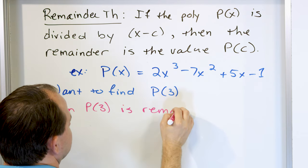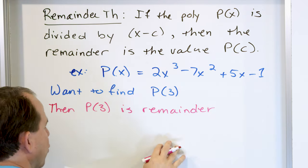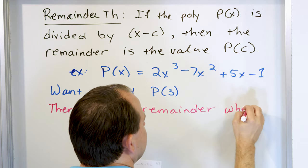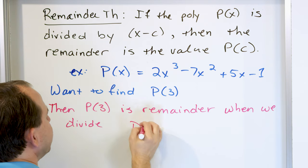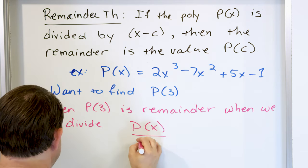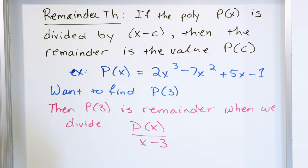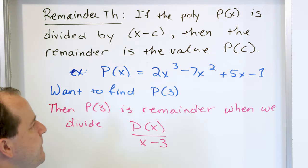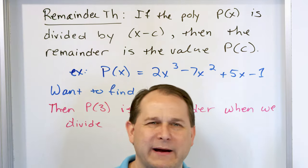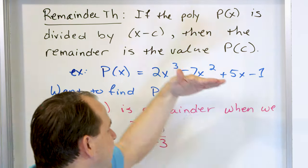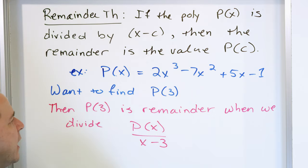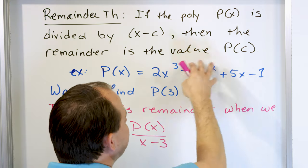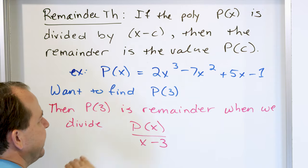I need to let this sink in. The black text is what you might see in a book, but what I really want you to think about is much simpler: say you have some polynomial and you want to figure out what the value is at x equals 3. Of course I can put the number 3 in there and calculate it, but there's an alternative — take the polynomial and divide it by x minus whatever you're evaluating at.